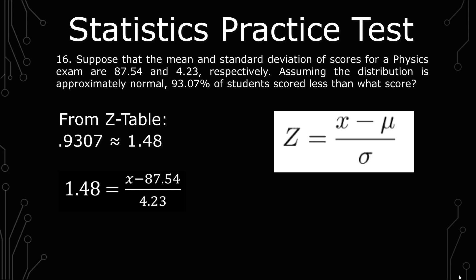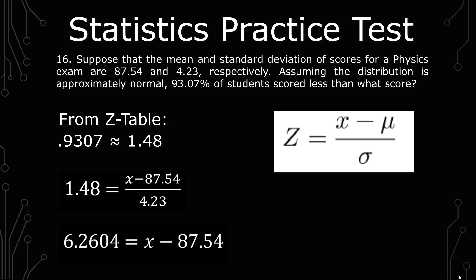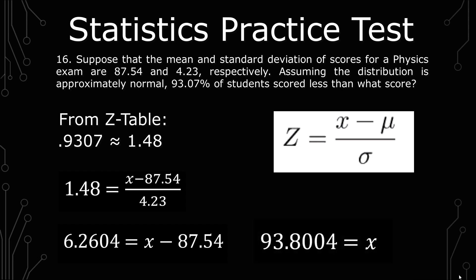And then you just algebraically solve for x. So you multiply both sides by 4.23 to give you 6.2604 equals x minus 87.54. And then you add 87.54 to both sides to give you 93.8004 equals x.